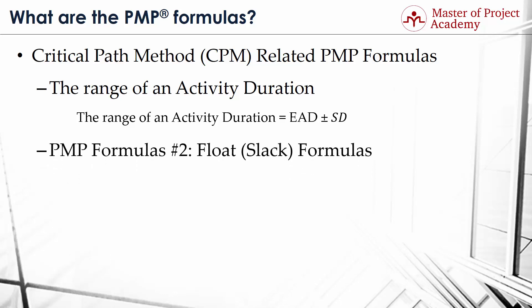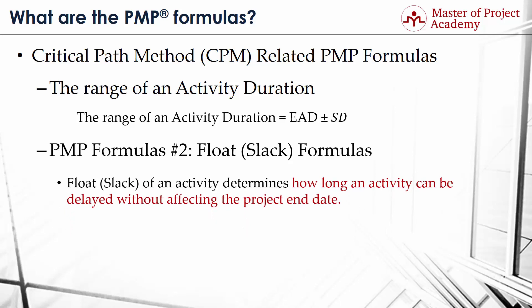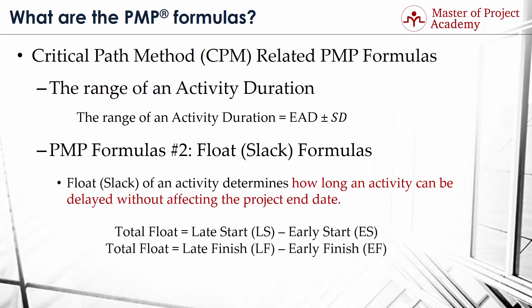PMP formula number 2: Float or Slack Formulas. Float or Slack of an Activity determines how long an activity can be delayed without affecting the project end date. Accordingly, if an activity is on the critical path, the float or slack of that activity will be zero. In order to calculate an activity float, first we determine Late Start (LS) and Early Start (ES) values of the activity. Alternatively, we may use Late Finish (LF) and Early Finish (EF) values. The formula for total float is: Total Float equals Late Start minus Early Start, and Total Float equals Late Finish minus Early Finish.